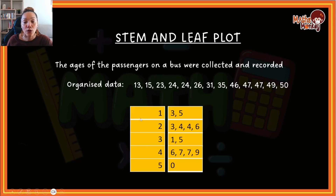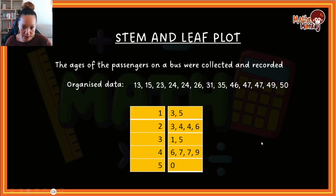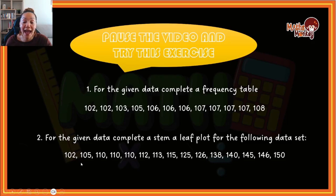This is how you create a stem and leaf plot — it gives you an easier way to look at the data and see what has been collected. What I'd like you to do is pause this video and try to draw a frequency table for the data set from 102 to 108, and then draw a stem and leaf plot for the bottom data set. Remember, in our first example the stem was one digit — in this case, as a little hint, it will be two digits. Pause the video now, and when you're done, unpause it and I'll show you the answers.